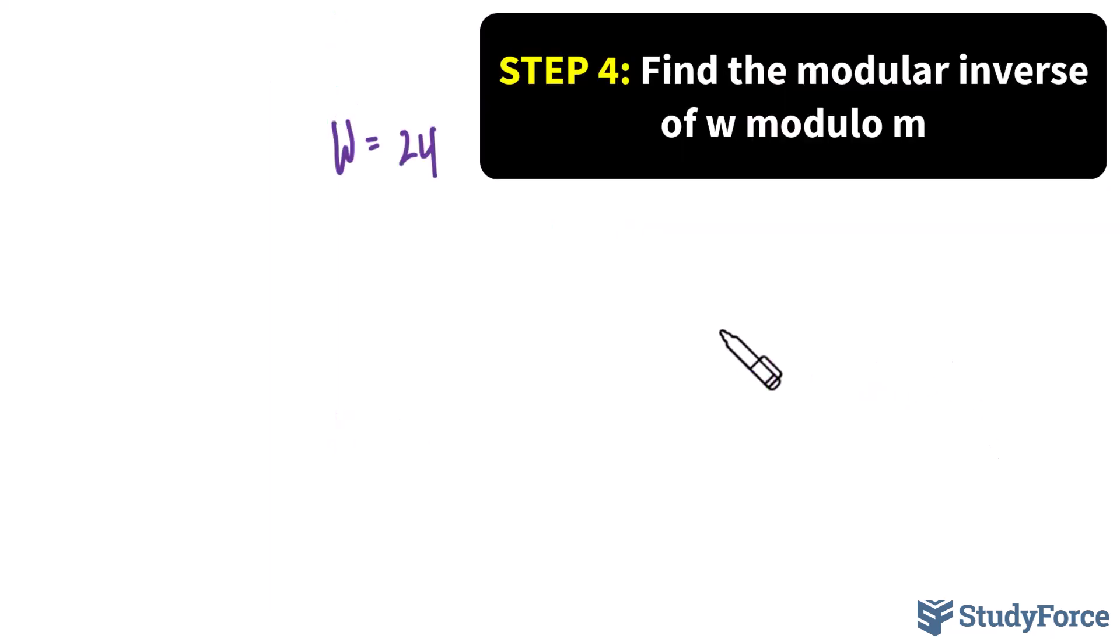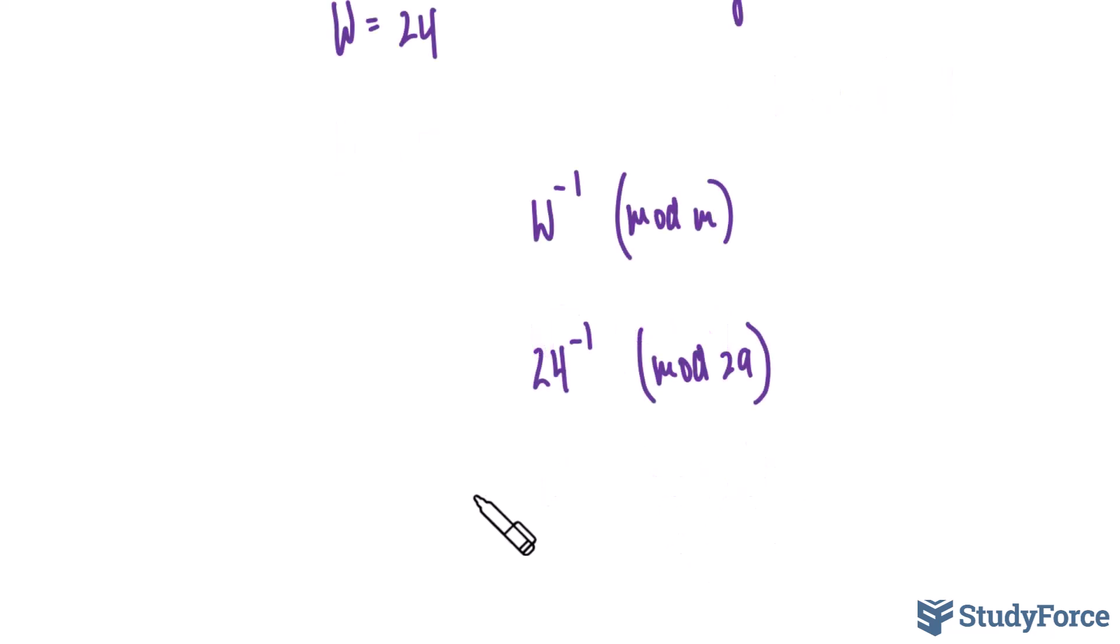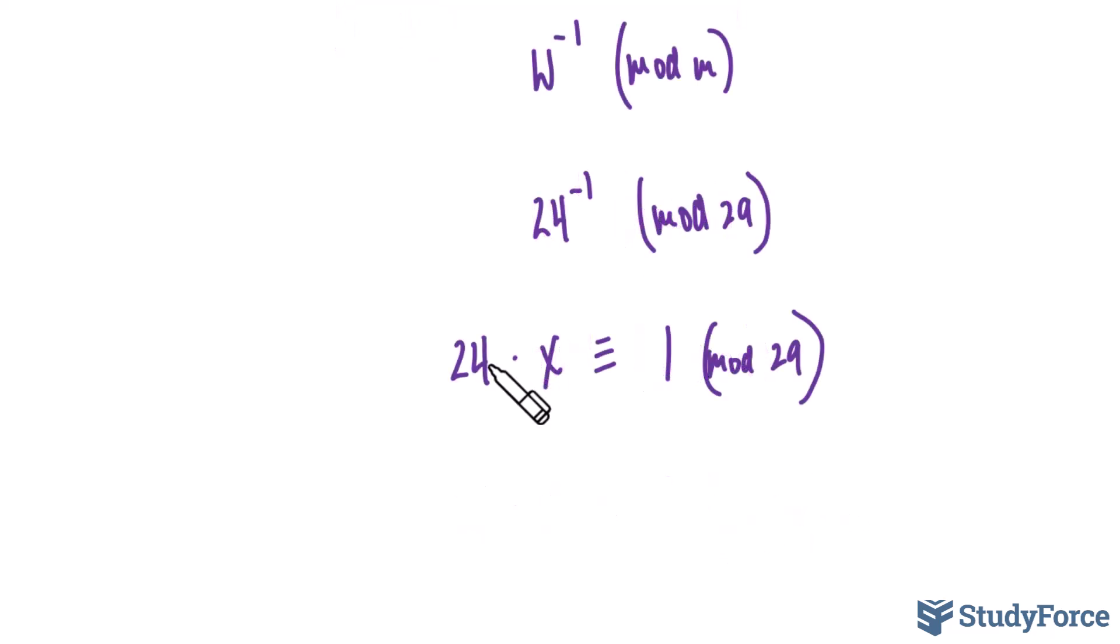In step number 4, we need to find the modular inverse of w mod m. This is mathematically written as the modular inverse of w mod m. Our value for w is 24, and our m value that we chose was 29. What we're looking for here is a value x such that when multiplied to 24, its product is congruent to 1 mod 29. That is, what value, when multiplied to 24, its product, when divided by 29, gives a remainder of 1? That's sort of hard to do, so we use the extended Euclidean algorithm to help us out.